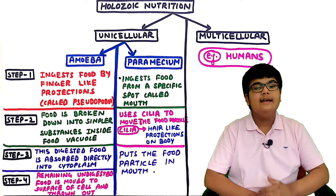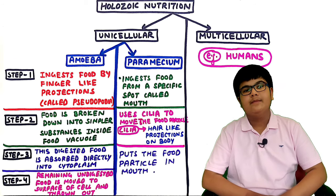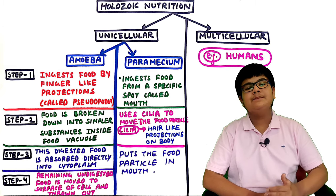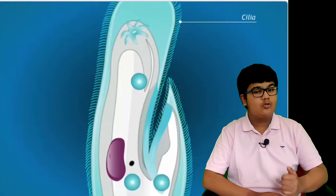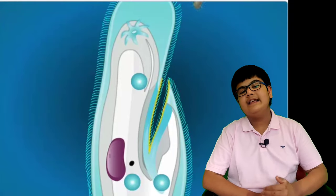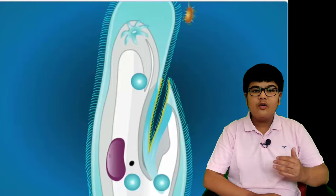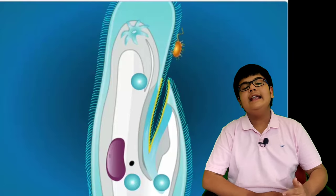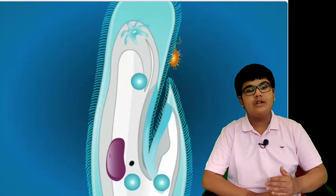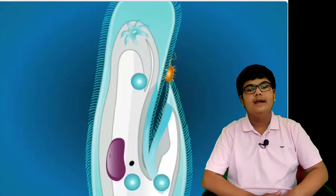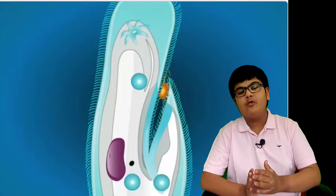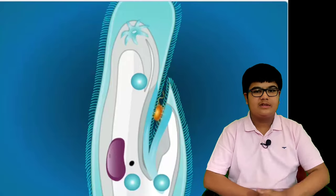Second, Paramecia - it ingests food from a specific spot called the mouth. It uses cilia, which are hair-like projections on its body, to move food particles into its mouth.